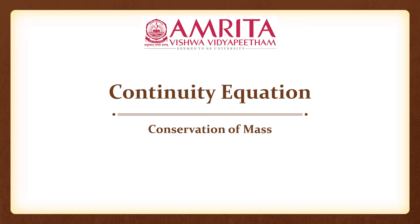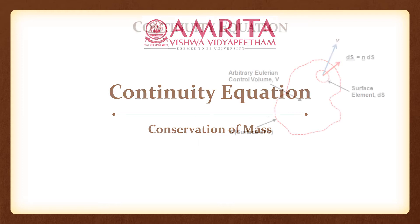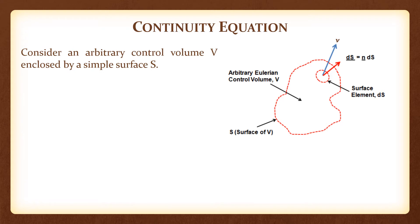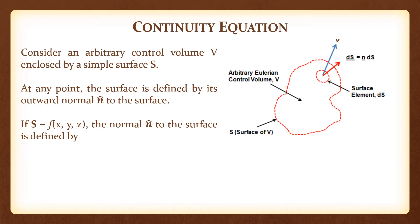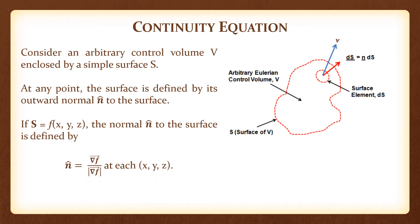This conservation of mass is also known as the continuity equation. You have learned this in various courses, starting from fluid mechanics to transport phenomena. Consider an arbitrary control volume V, which is enclosed by a simple surface S. At any point on the surface, the surface is defined in terms of the direction of curvature by its outward normal. If S is a function of x, y, z — you could consider any coordinate system — for simplicity, I have mentioned the Cartesian coordinate system. The normal to the surface is defined by the unit vector along the direction of the gradient of that function at that particular point.